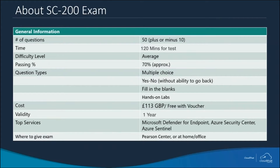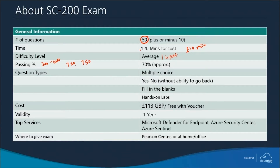The SC-200 is curated of about 50 questions — plus or minus 10. The difficulty level is intermediate to expert. The passing percentage: Microsoft validates you between 300 to 1000 marks, and the passing criteria is somewhere around 720 to 750 marks, which is more or less about 70 to 75 percent of the score.